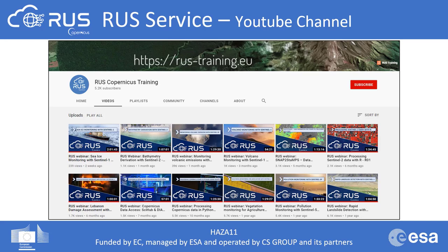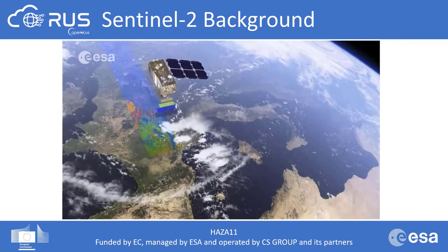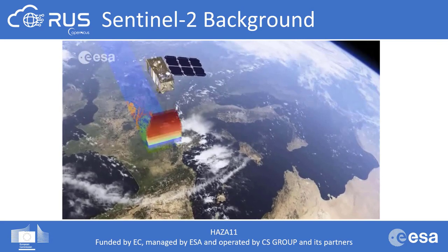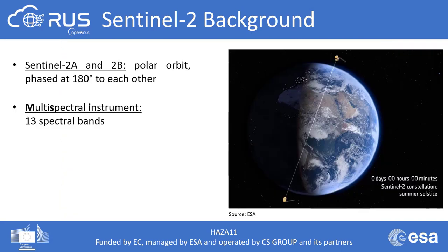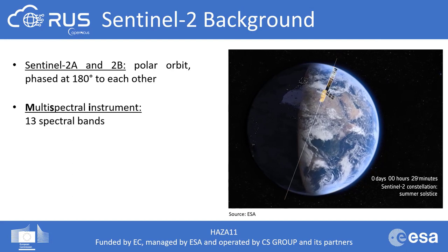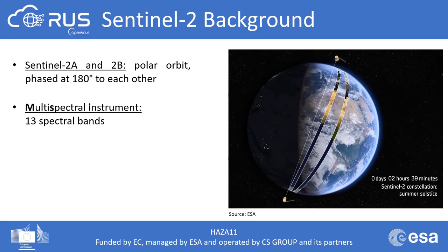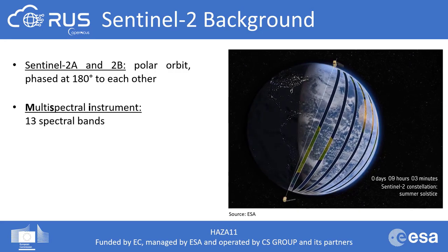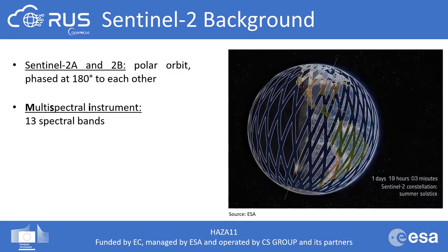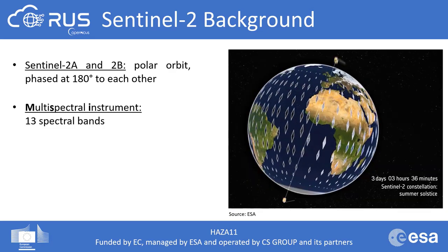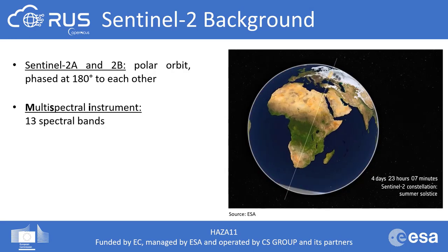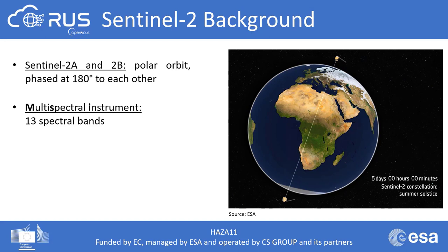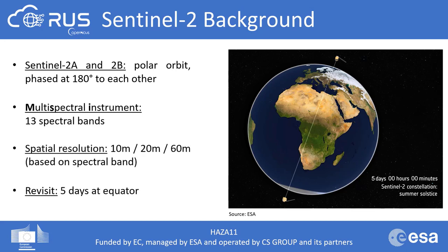Now let's look at some information about the Sentinel-2 satellite. For this exercise we will use optical data from the Sentinel-2 satellite constellation. Sentinel-2 carries a passive sensor, meaning it observes the Earth's surface using external energy sources like sunlight. It is formed by a constellation of two twin satellites, Sentinel-2A and 2B, passing in a polar orbit — meaning they complete circles around the Earth passing always through the north and south poles. They are phased at 180 degrees to each other, and the multispectral instrument carries 13 spectral bands. Spatial resolution varies by spectral band to 10, 20, or 60 meters, and at the equator it has a revisit time of five days.